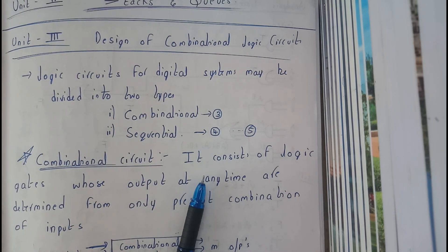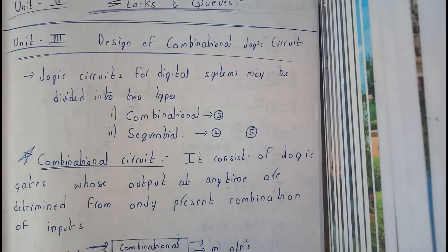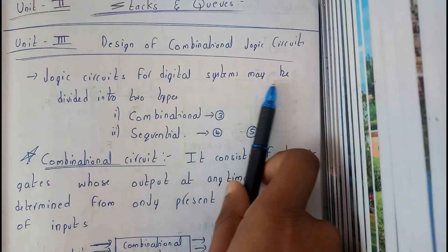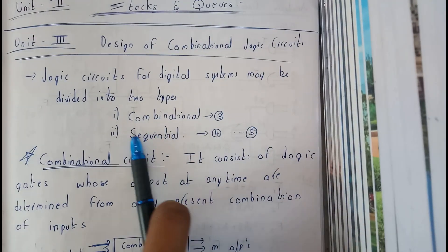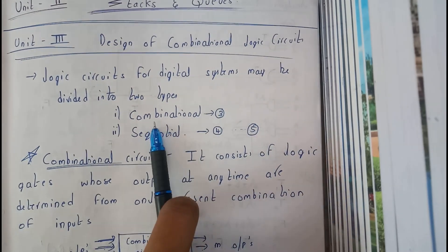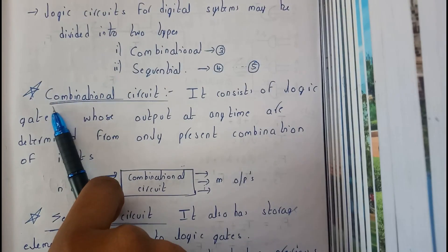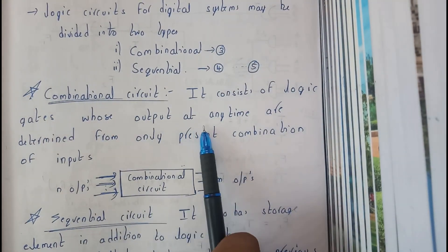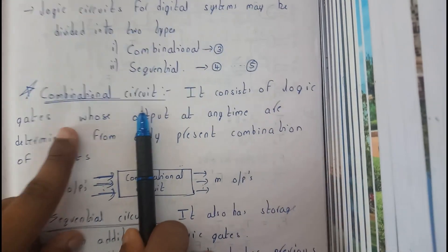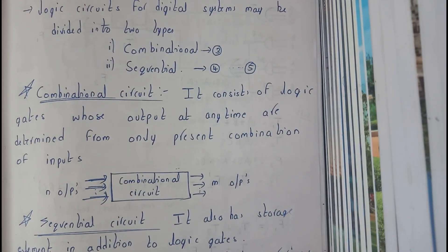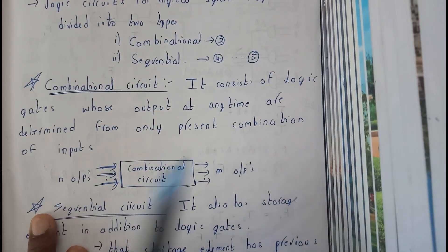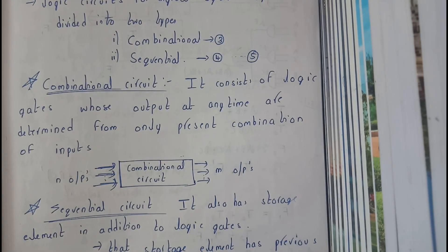Logical circuits — I hope everyone knows — are circuits which are made with logic gates. Logical circuits for digital systems may be divided into two major types: one will be combinational and another one will be sequential. Now, a combinational circuit consists of logic gates whose outputs at any time are determined from only the present combination of inputs. So it only depends on the present input — whatever input is given, the output will be produced accordingly.